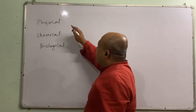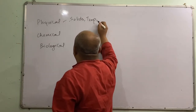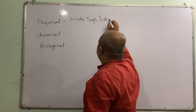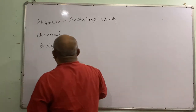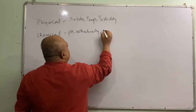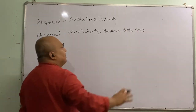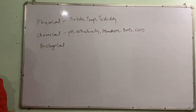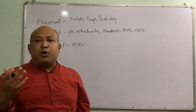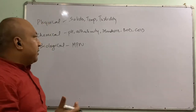Many of the physical parameters like solids, temperature, and turbidity will be explained. In solids we have different types of solids. Chemical parameters like pH, alkalinity, hardness, BOD, COD — a little bit of concept on how to estimate all these techniques will be explained. Biological parameters like Most Probable Number will also be covered. I am not going to demonstrate equipment, but rather the methodology and procedure, just like a faculty teaching a practical class.